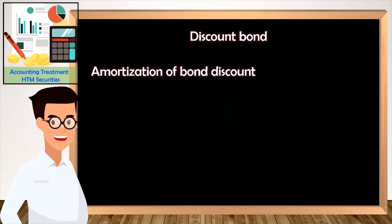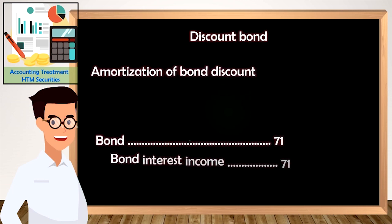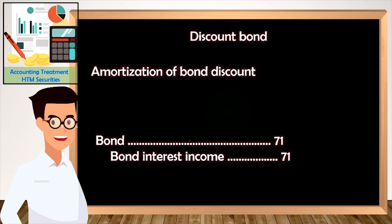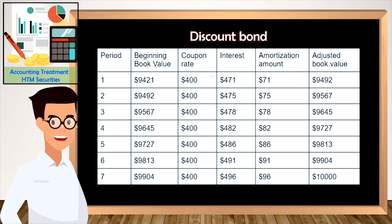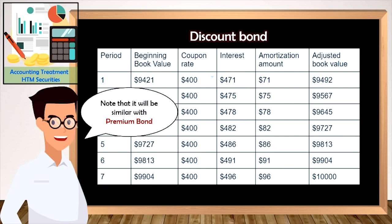This is the accounting entry to record the amortization of bond discount. From this table, the adjusted book value of the bond will appear in the balance sheet at the end of the period. For a premium bond, the accounting treatment is similar, except the amortization will decrease the bond's book value over time.